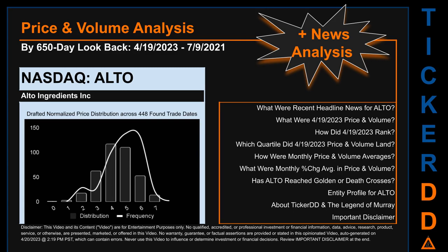Now that we have made our lawyers happy, capitalist brothers and sisters, let's get started. ALTO went public on March 24, 2005, which was roughly 18 years and one month ago. Looking back 650 calendar days from Wednesday, April 19, 2023 to Friday, July 9, 2021, we found 448 applicable trade dates for use in our analysis. The chart shown on this page is our initial attempt at studying the price for ALTO after dynamically normalizing price distribution across those discovered trade dates.